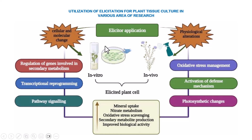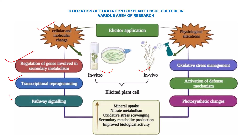Elicitation can be utilized for plant tissue culture in various aspects of research. Elicitor application can be used for in vitro as well as in vivo studies. In vitro culture is used for cellular and molecular changes — studying regulation of genes and proteins involved in secondary metabolism, transcriptional reprogramming, and pathway signalling. In vivo studies help manage oxidative stress, activate defence mechanisms, and study photosynthetic changes, all contributing to mineral uptake, nitrate metabolism, oxidative stress scavenging, secondary metabolite production, and improved biological activity.